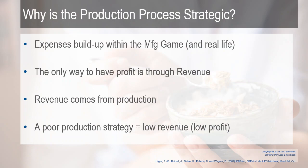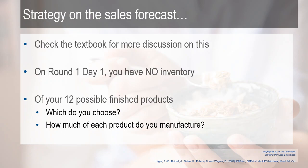Why is this strategic? Within the manufacturing game you have expenses — daily expenses that are building up, just like in real life — and the only way to have profit is to have revenue. You start out with no inventory. The only way to have revenue, the only way to have sales, is from production. A good production strategy means more revenue; a poor production strategy equals low revenue or low profit. There's more about this within the textbook — make sure you read through it.